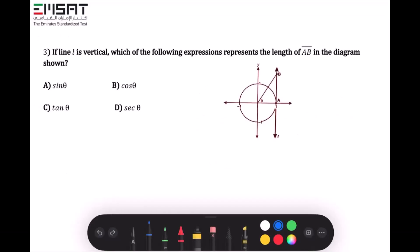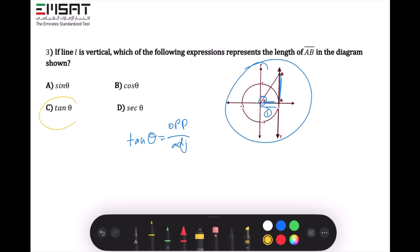If line l is vertical, which of the following expressions represent the length of line AB in the diagram? First you have to determine what is given and what is required. What's given to you is that this over here is a unit circle and it has a radius of one, and the adjacent side of this angle is one. So it's given to you, and it asks you which expressions represents the length of line AB in this diagram. This is line AB. Since it's given to you the adjacent and we need to find the opposite, which is line AB, we are going to use tan, since tan is equal to opposite over adjacent. So the answer is tan.